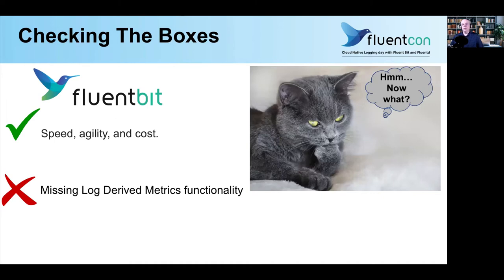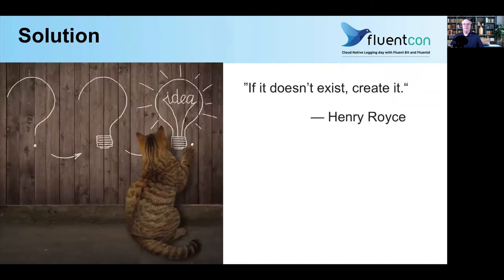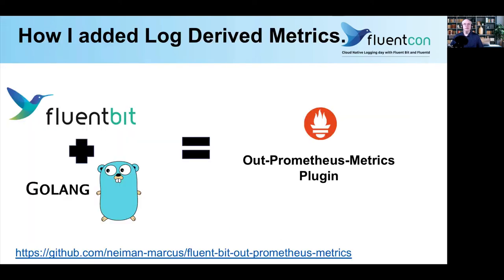So, what do you do? Well, if it doesn't exist, create it — says Henry Royce. So I did. This is how I added log-derived metrics to FluentBit. I used the GoLang SDK and built an output Prometheus metrics plugin.